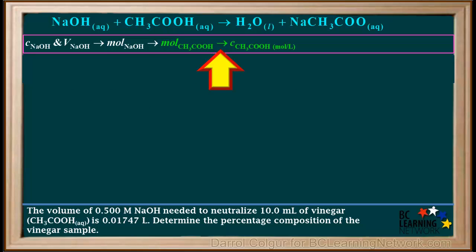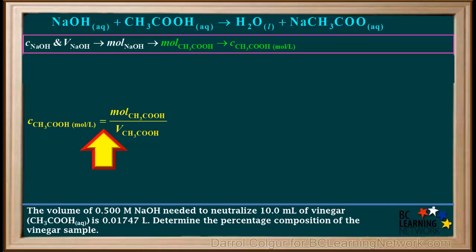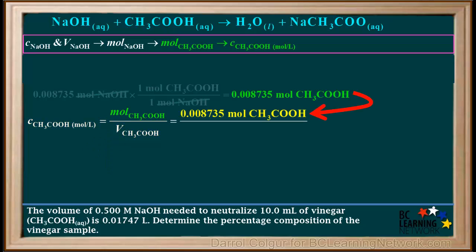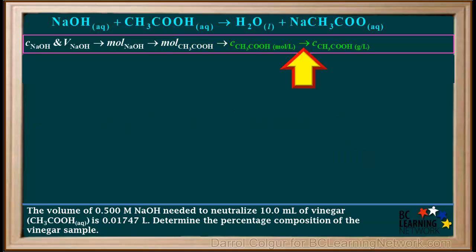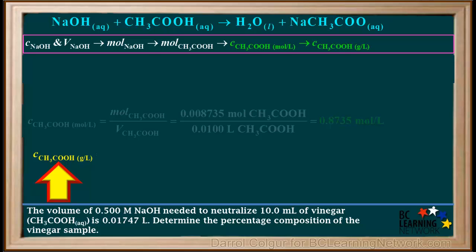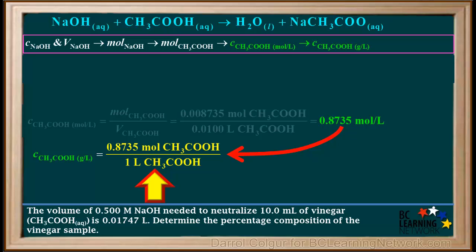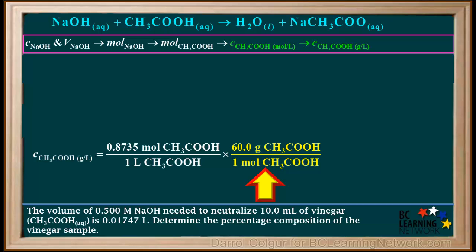The next thing we have to do is calculate the molar concentration of CH3COOH, knowing the moles and the volume in liters. We use the formula: concentration of CH3COOH equals moles of CH3COOH divided by volume of CH3COOH in liters, which is 0.008735 moles divided by 10 milliliters or 0.0100 liters, coming out to 0.8735 moles per liter. The next step is to convert this to grams per liter: 0.8735 moles per liter times the molar mass of CH3COOH, which is 60 grams per mole, gives us 52.41 grams of CH3COOH in one liter.